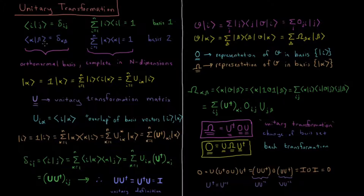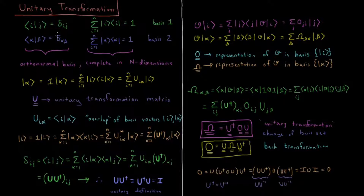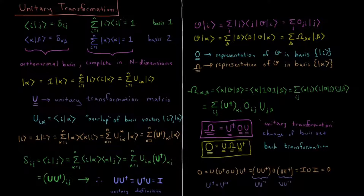Similarly, we have basis set 2, represented by alpha and beta. It too is orthonormal and complete. We want to know the relationship between basis set 1 and basis set 2, and how we can transform various things from one basis set to another.